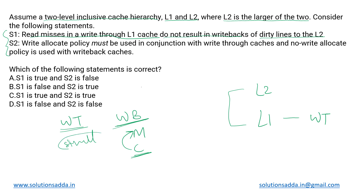In write-through, both cache and memory are updated at the same time, but in write-back that does not take place. The second statement says that the write-allocate policy must be used in conjunction with a write-through cache, and the no-write-allocate policy should be used with a write-back cache.